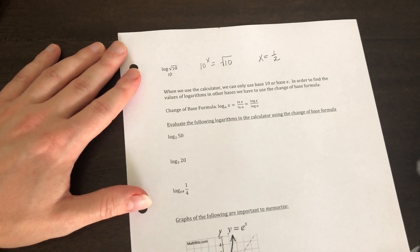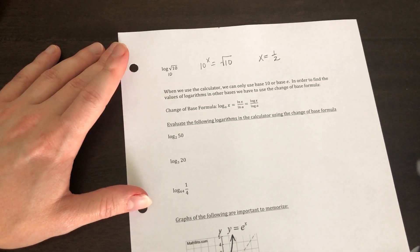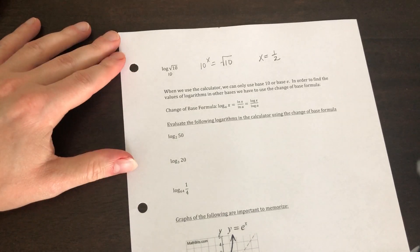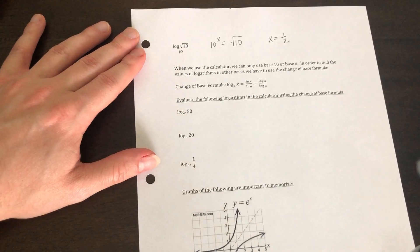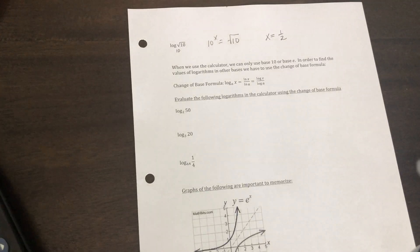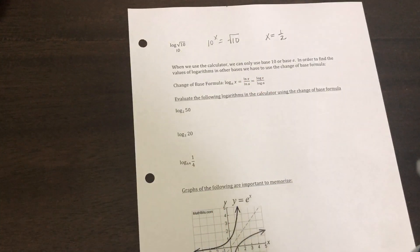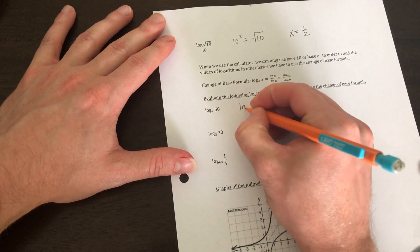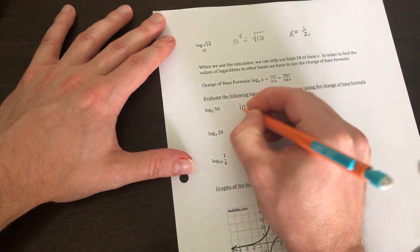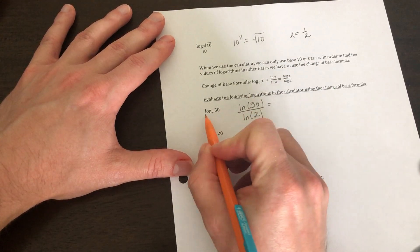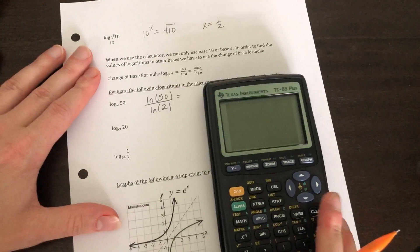Now when we have things that aren't base 10 and base e, we have to use our calculator on. So we have something called the change of base formula. So I like to use natural logs whenever I'm doing it. You can use logs, it doesn't matter as long as the bases match and the functions match. So the way we do this is we're going to say natural log of 50 over natural log of two. So you do natural log of the argument over natural log of the base. And we're going to put in the calculator.